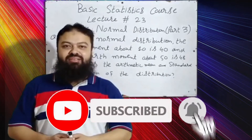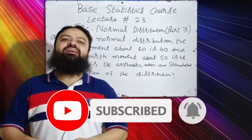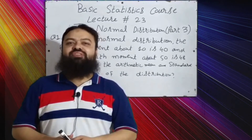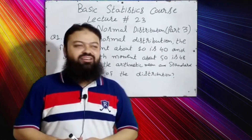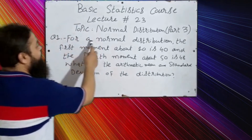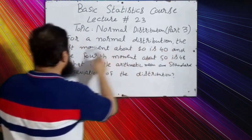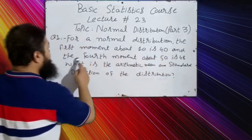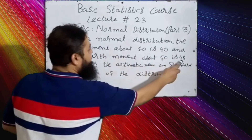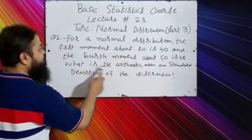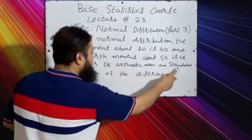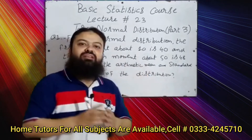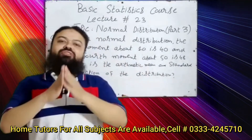Before starting, I request everyone to subscribe to my channel, like and share, and click the bell icon for notifications of the next videos. Let's start. Question number one: for a normal distribution, the first moment about 10 is 40 and the fourth moment about 50 is 48. What is the arithmetic mean and standard deviation of the distribution?